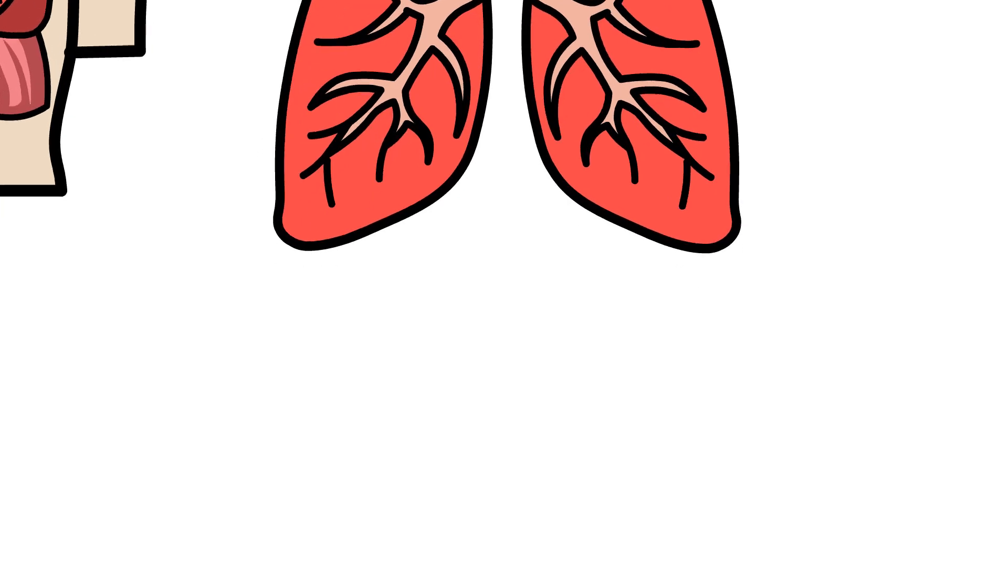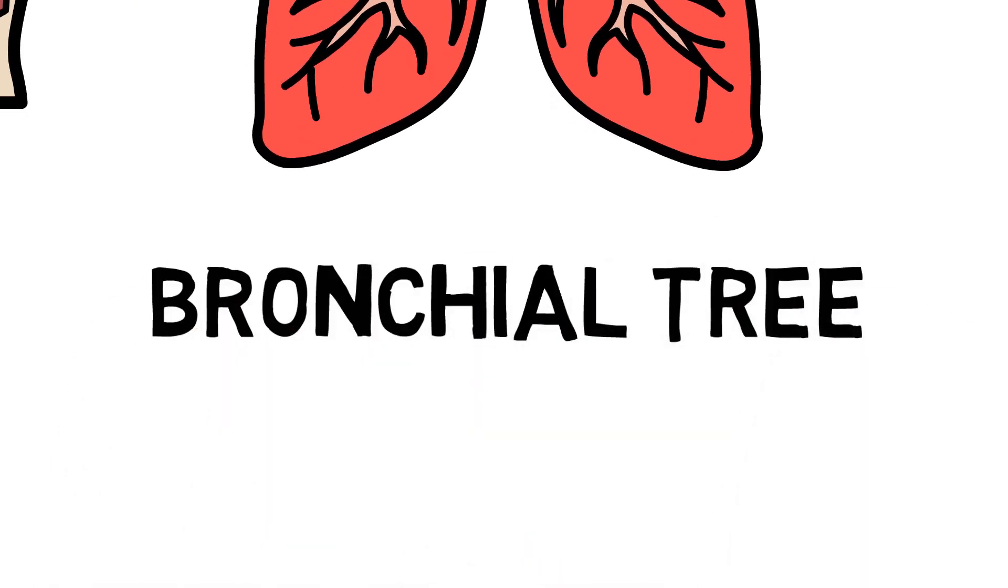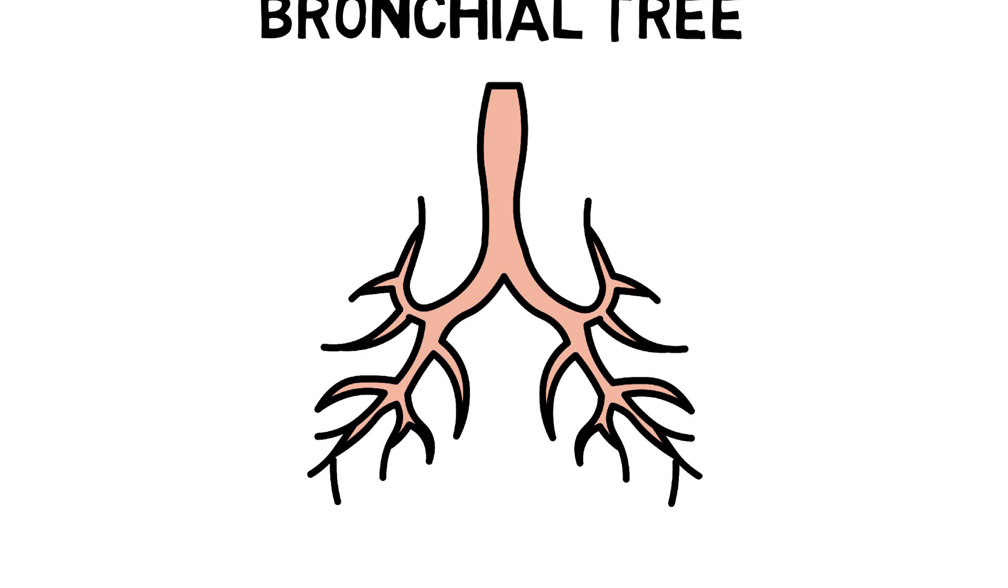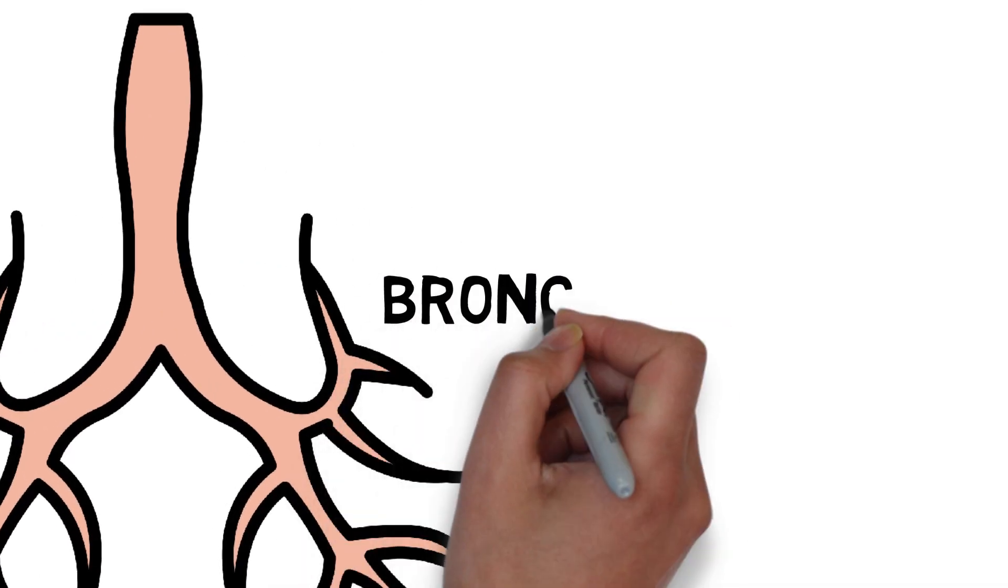The respiratory tree, also called the bronchial tree, is a name given to the branch-like structure in our lungs, which includes the bronchi right down to the tiny air sacs called alveoli.